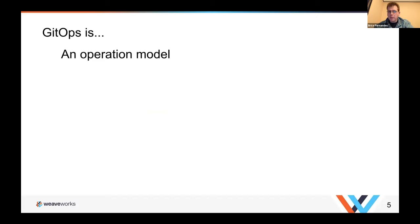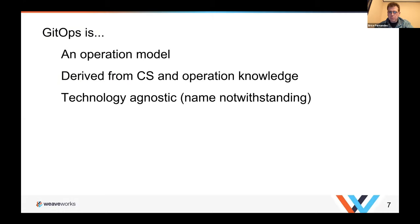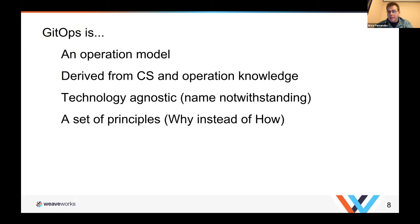Let's talk about the GitOps model. GitOps is an operational model — it's how you operate your infrastructure. It's derived from computer science and operational knowledge. It's technology agnostic, so it's a lot about the why, not the how. It's about the principles. We're using Git because it's a really good tool for what we're trying to do, and you can apply these principles outside of specific tools.